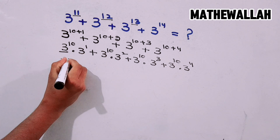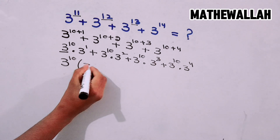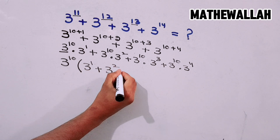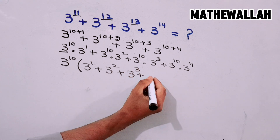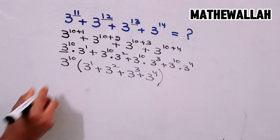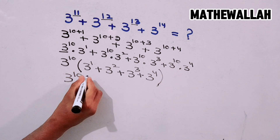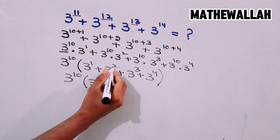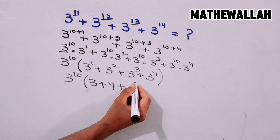We can see that 3 power 10 is common in all terms, so we factor it out. We write 3 power 10 multiplied by the bracket: 3 power 1 plus 3 power 2 plus 3 power 3 plus 3 power 4, which equals 3 plus 9 plus...